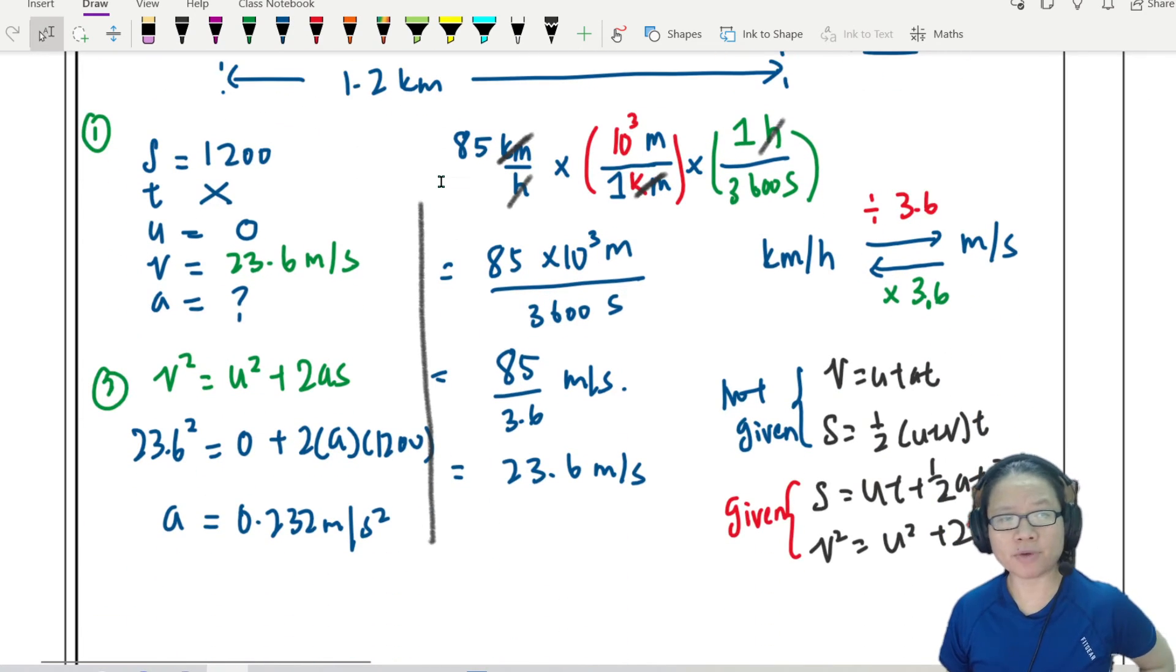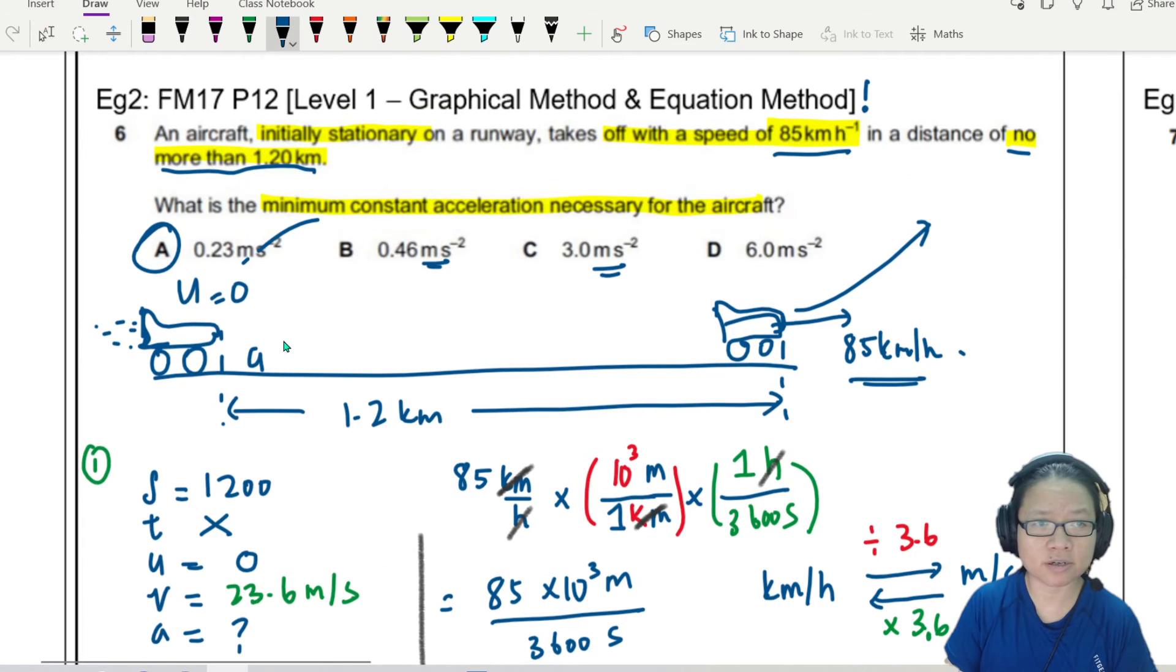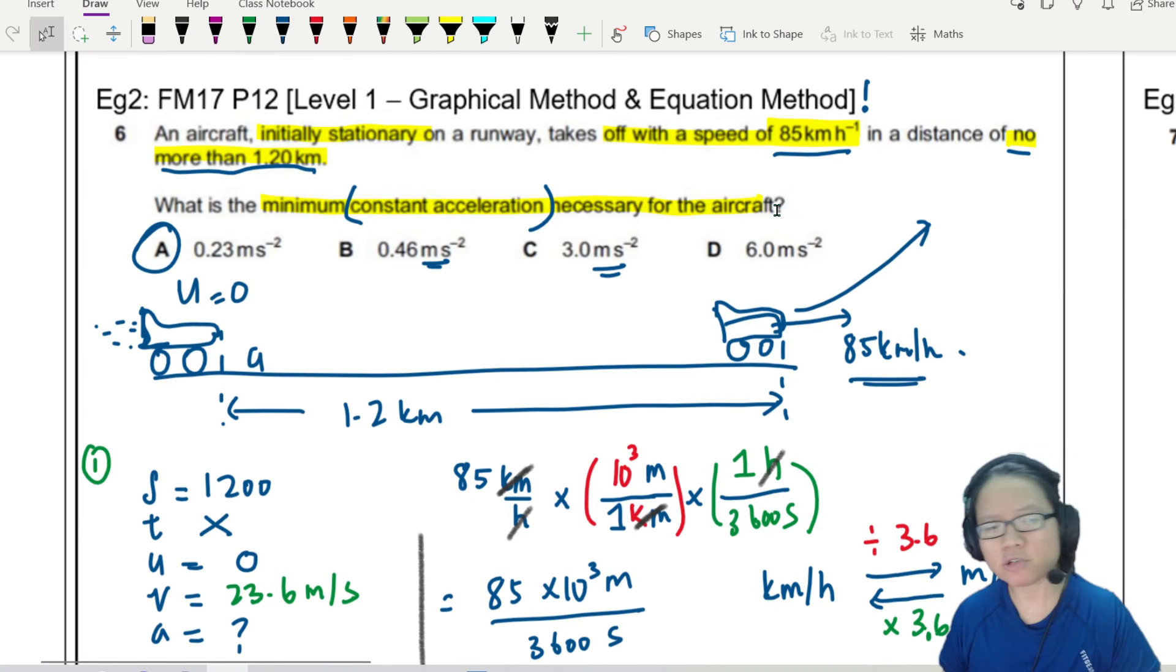So, in the end, you really have to read and understand the question. And make sure you convert your units. When you read and understand the question, make sure that you are clear that the acceleration is constant. In this case, we know it's constant because it says here, minimum constant acceleration.